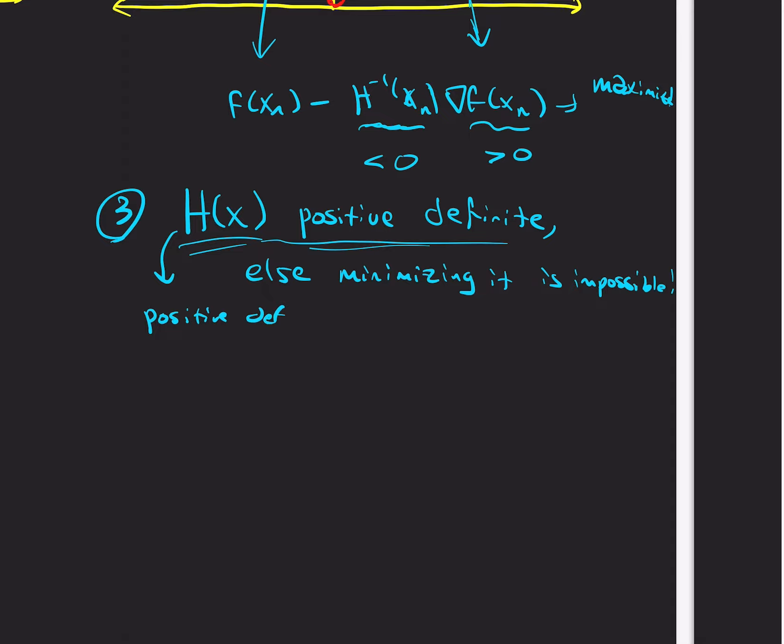when we can't guarantee this positive definite approximation to h of x is the basis of a class of, well, basis of really quasi-Newton methods in general. And that's what we'll get into in the next video.